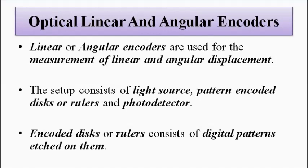So I want you to please watch that video in detail about optical and angular encoders. The basic principle of optical and angular encoder involves a light source, a digitally encoded pattern which is etched on discs or rulers, and a photodetector. So a simple setup it includes a pattern which is etched on a movable ruler through which light is continuously focused.